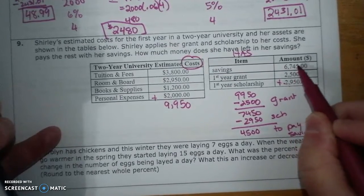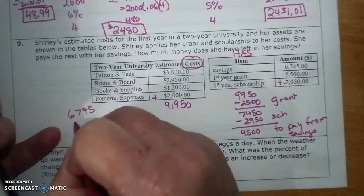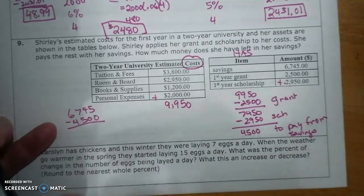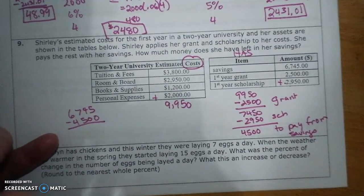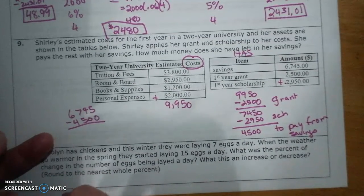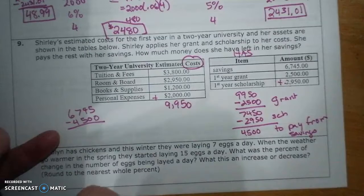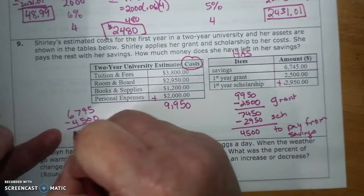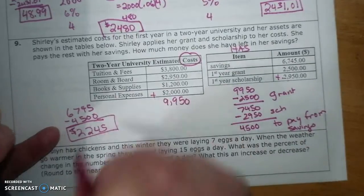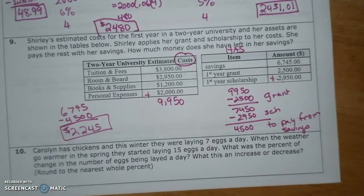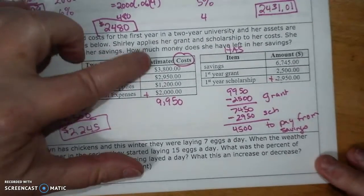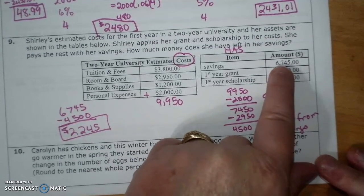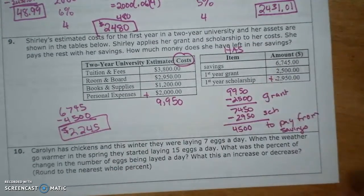And so this is what's in savings, so it's $6,745. And I have to pay the $4,500, and that will tell me what's left. So I'm going to do $6,745 minus $4,500 equals $2,245 left in my savings. Okay, so here's my bill, I paid it with my grant, I paid it with my scholarship, I had to pay some of it but I had some left over.